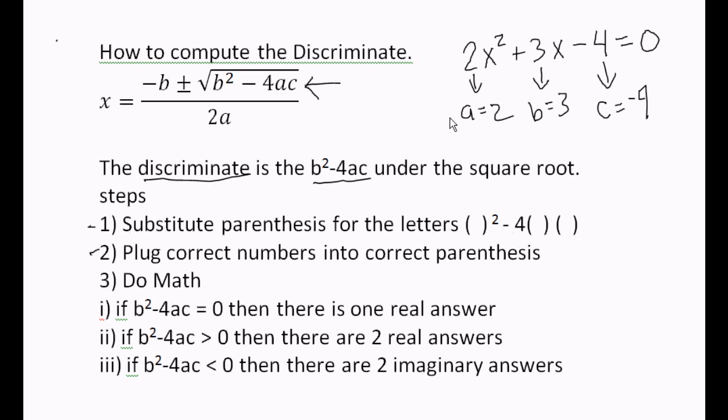Step 2, plug the correct number, whichever number you have. b was 3, a was 2 up above, and c was negative 4. Plug the correct numbers into the correct parentheses. We did that. And then do the math.